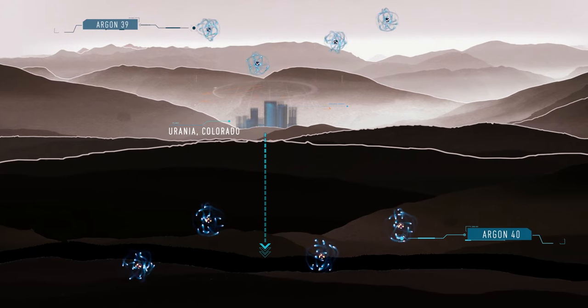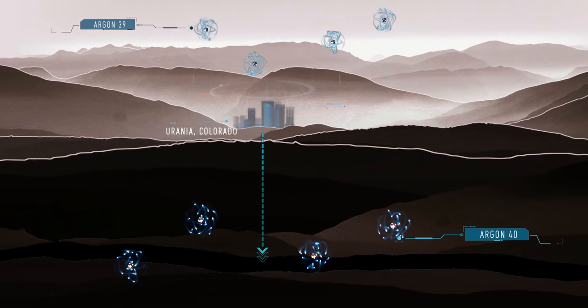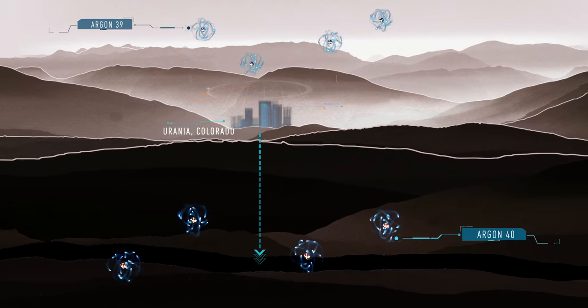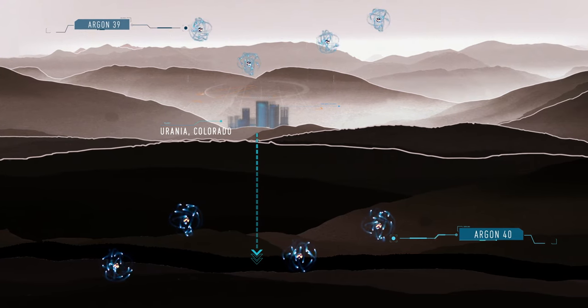Located there for thousands of years, the stable argon-40 is shielded from the cosmic rays, while the argon-39 has had the time to vanish almost entirely by decaying.